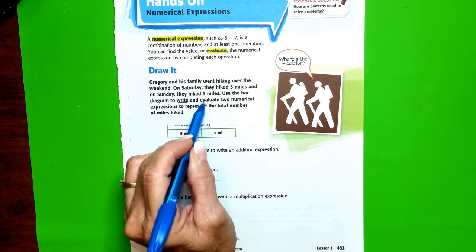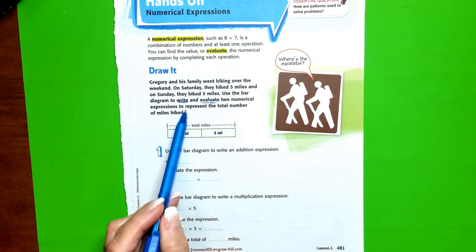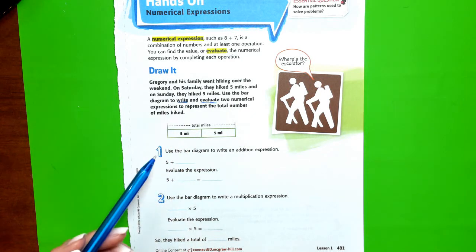Step one is to write the expression. Step two will be to solve it. Evaluate two numerical expressions to represent the total number of miles hiked.